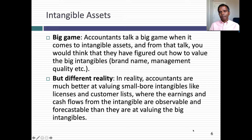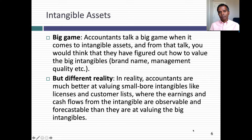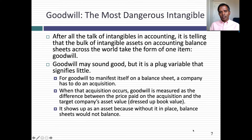And then you have intangible assets. Accountants talk the big game when it comes to intangible assets — they talk about how much intangible assets account for as a portion of value, and they're absolutely right. If you and I think about intangible assets, we think about things like brand name, technological advantages, and networking benefits. But accountants, when they record intangible assets on balance sheets, reflect a very different reality — I call it small bore accounting. If you're looking for Coca-Cola's brand name value on its balance sheet, stop looking, because even if you find it, it will be no reflection of what its true brand name value is. In fact, the most widely reported intangible asset is not an asset at all — it's goodwill.